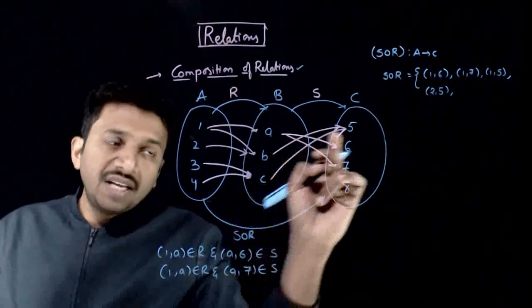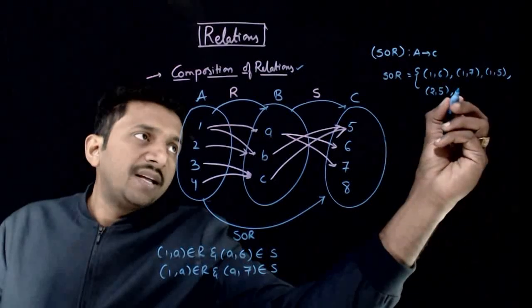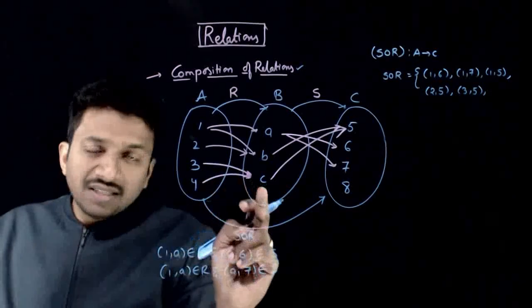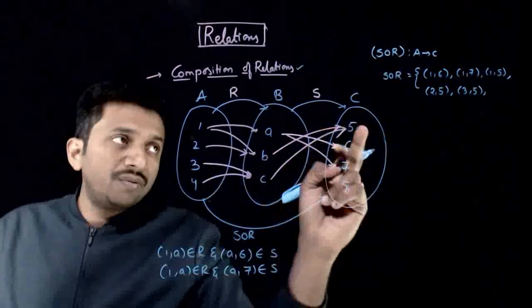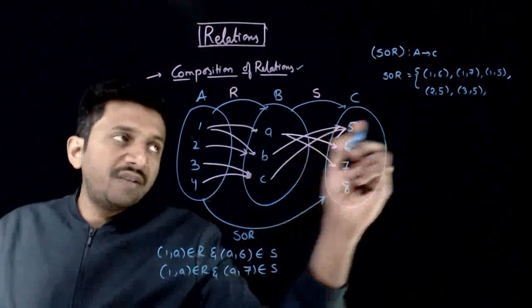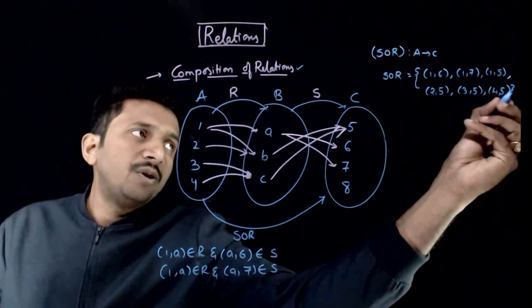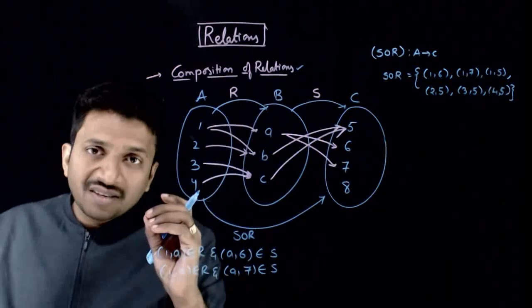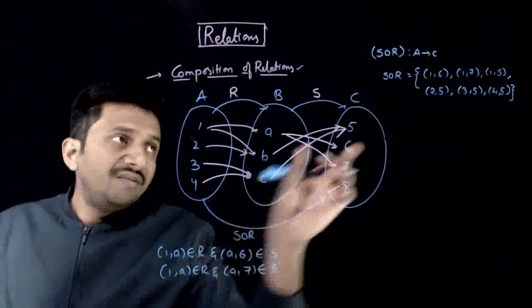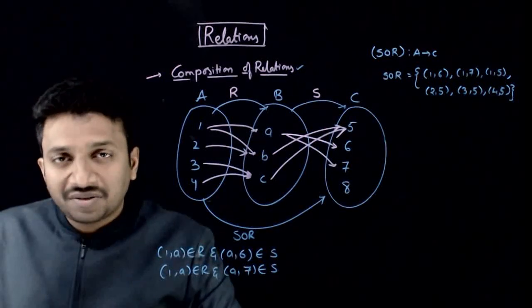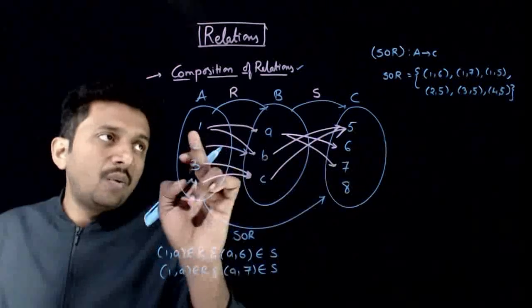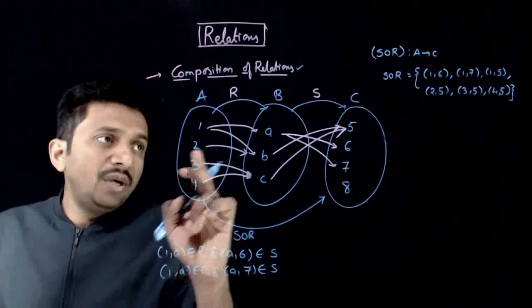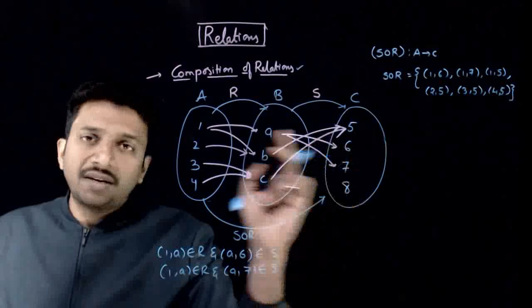Next, 3 to C and C to 5, so you get (3, 5) in SOR. Here, C is connected only to 5, so 3 goes to 5. Then 4 to C and C to 5 again, so (4, 5) also belongs to SOR.